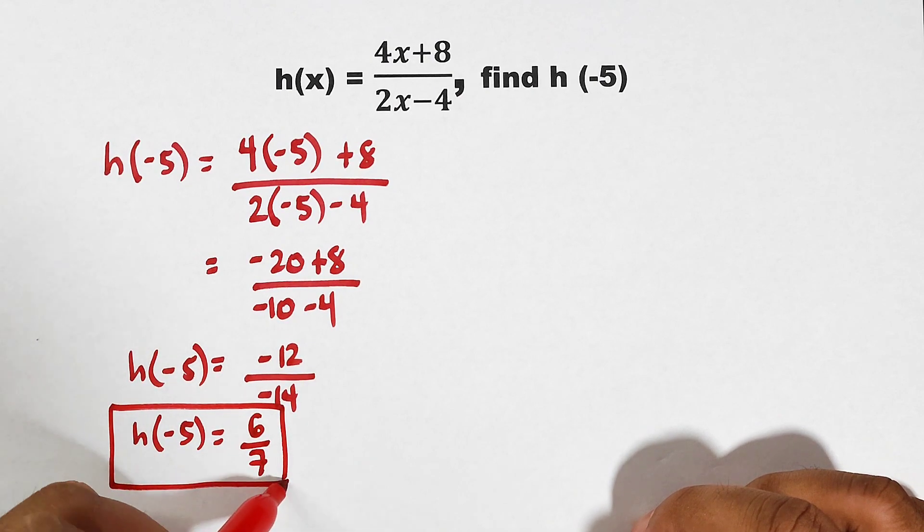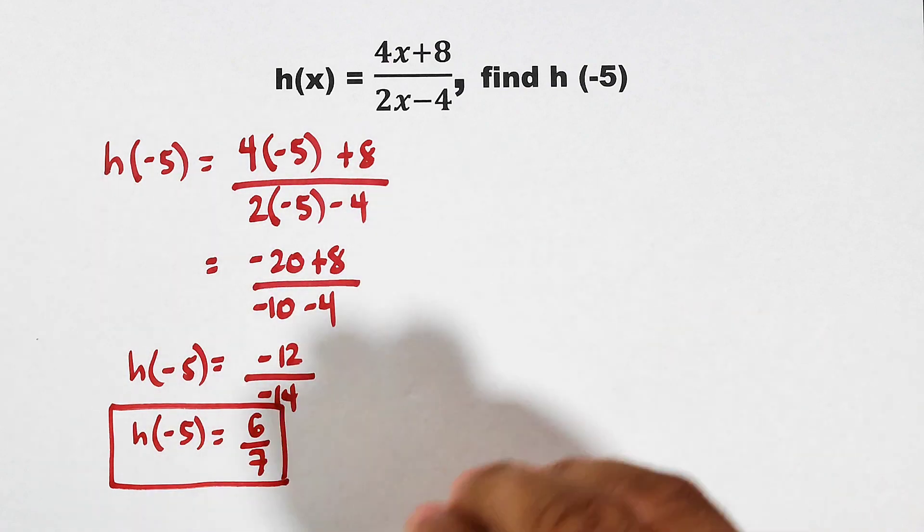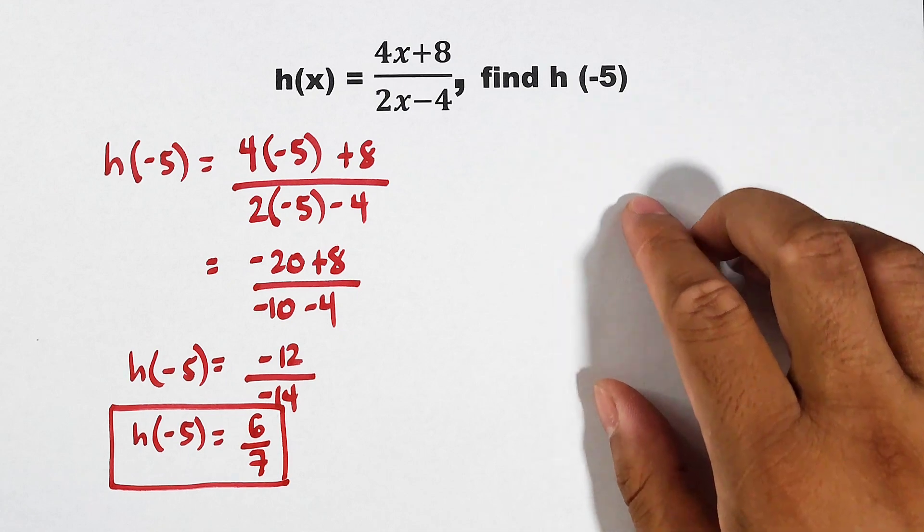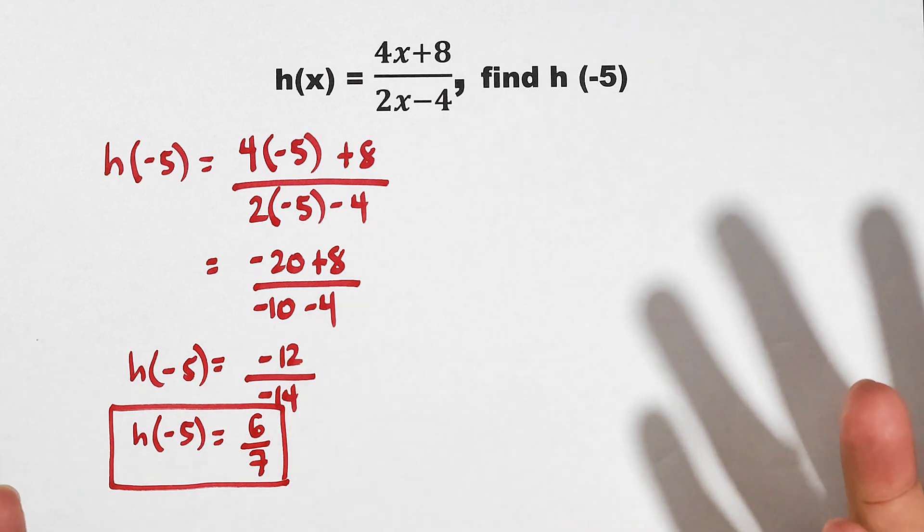Meaning guys, the evaluated value of function h given that your input is negative 5 is 6 over 7. So I hope guys you learned something from this video on how to evaluate functions.